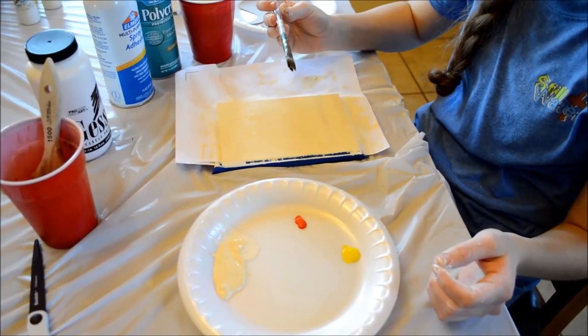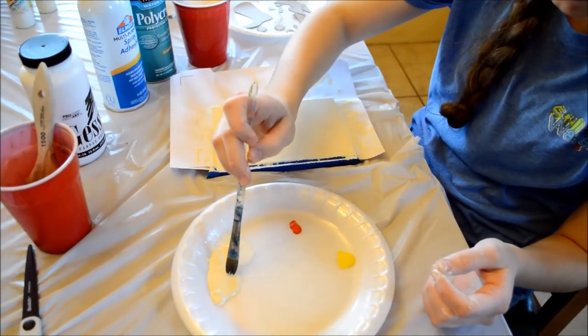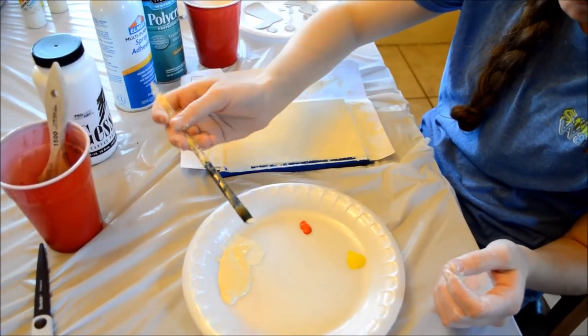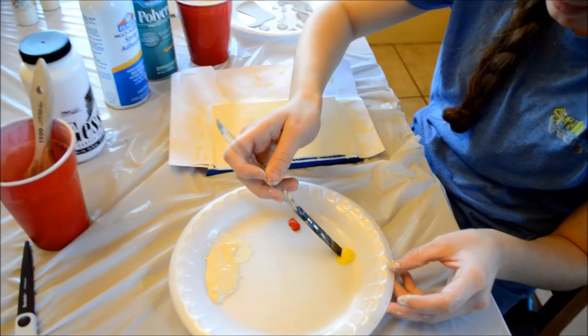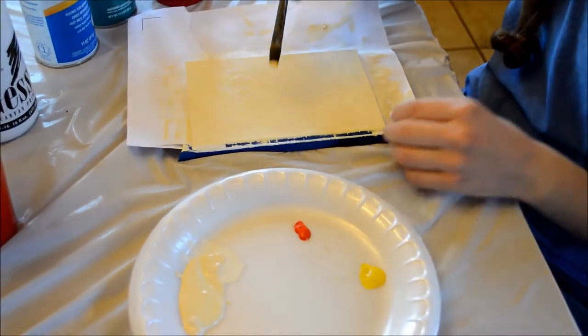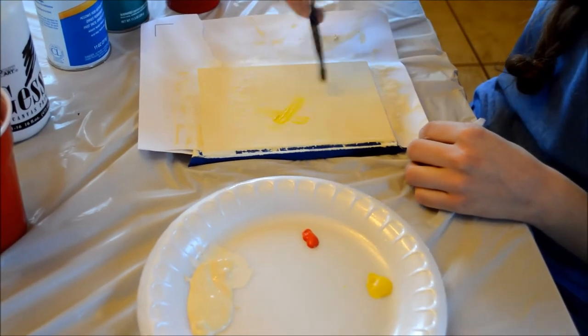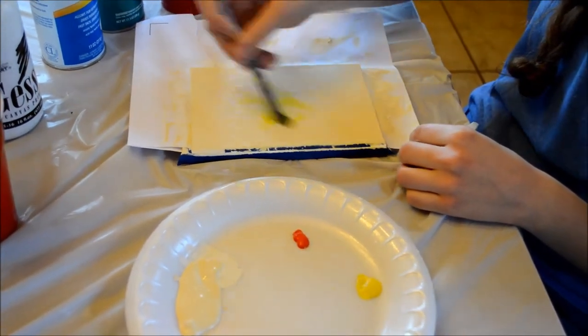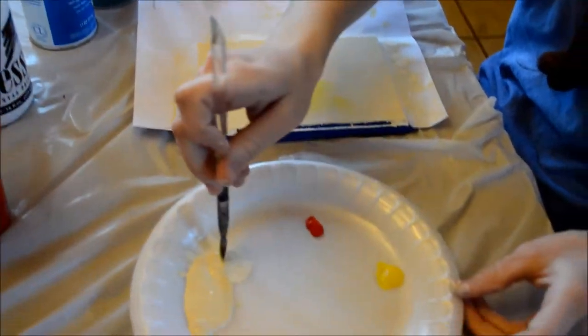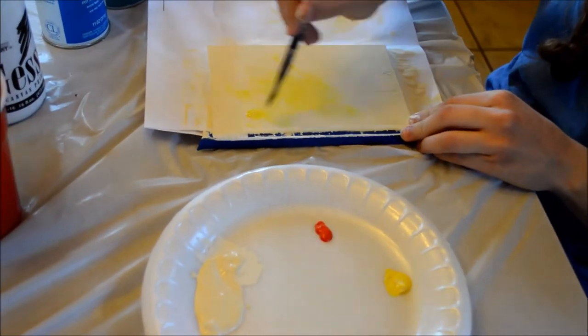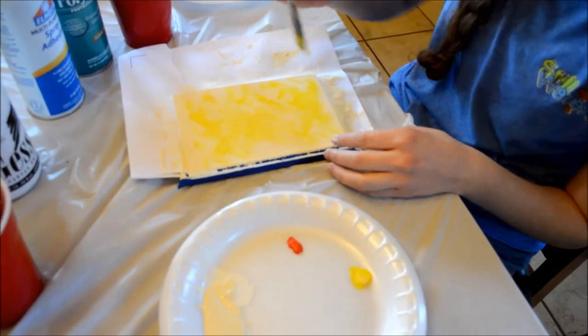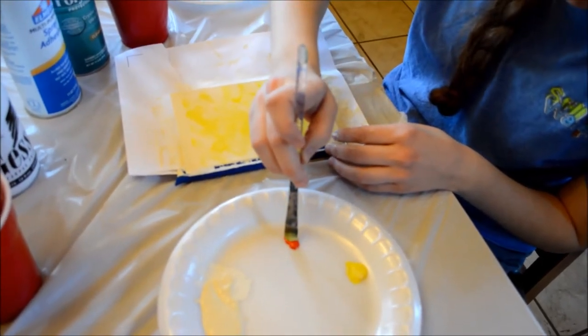So I've switched to a smaller brush. I'm gonna take a little bit of cream and a little bit of yellow. And I'm just gonna start in the middle and just do X's. You don't have to cover every spot. It doesn't have to be perfect.